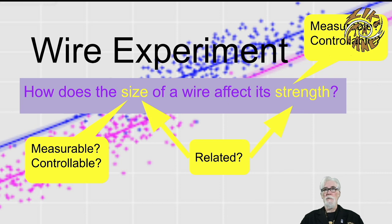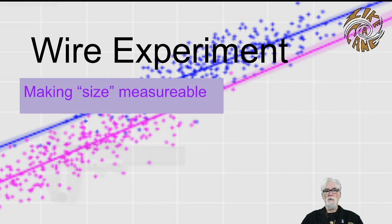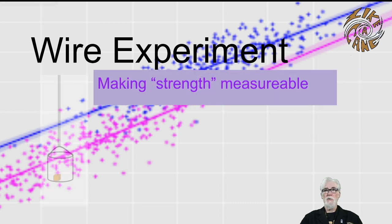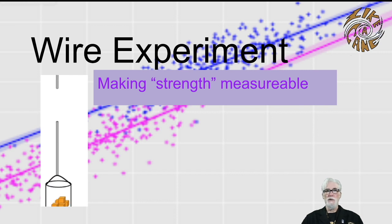We could measure the size of the wire by measuring its diameter using a tool like these calipers here. We could measure the strength of the wire by hanging weights from it and increasing the weight until we see it finally break, and then measuring how much weight it took to break the wire.